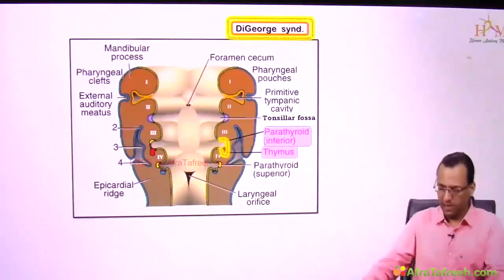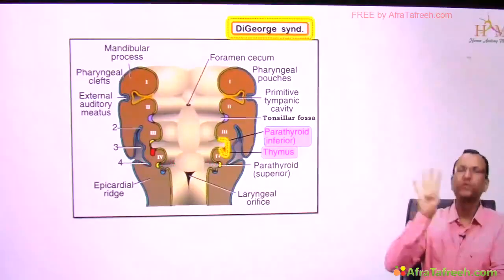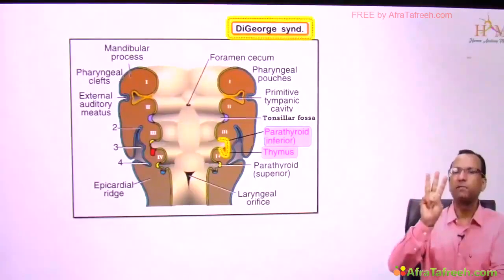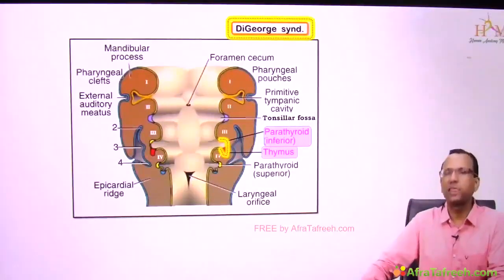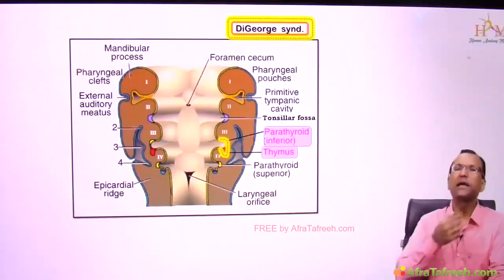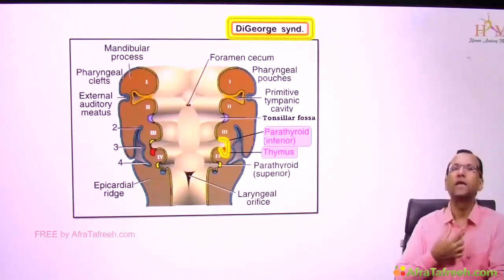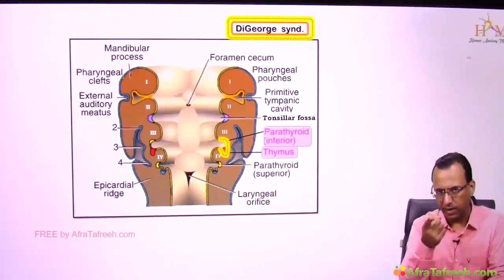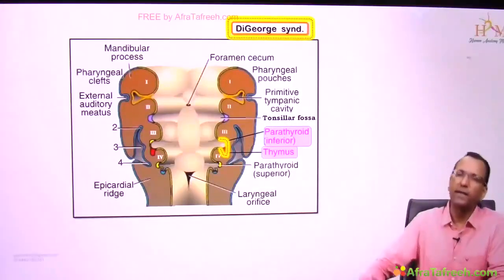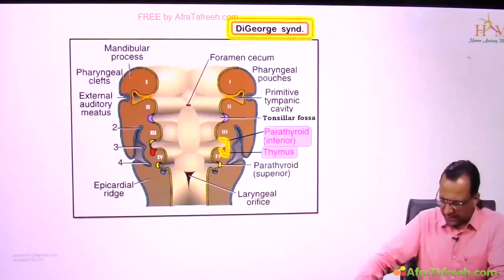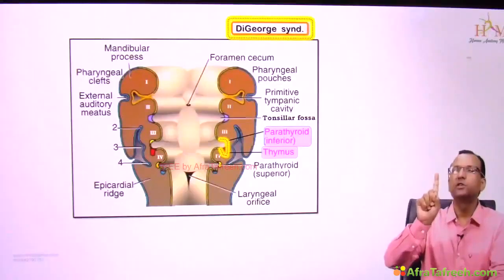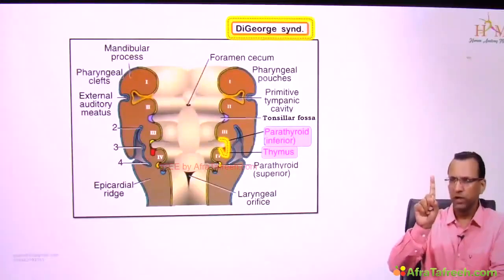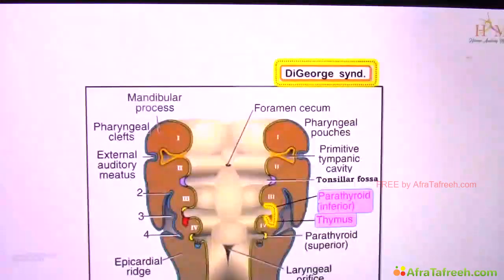In DiGeorge syndrome, when pouch 3 is involved, the baby may not have a thymus. With no thymus, there is nobody to train the T lymphocytes. Without trained T lymphocytes, there will be decreased cell-mediated immunity, and bacteria can kill the baby — causing severe bacterial infection.